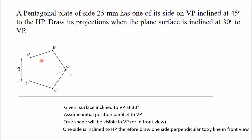This plane is parallel to VP, so the top view will be a line which is parallel to the XY line. One side is on VP, so I have kept one side A-dash E-dash on VP. Therefore the entire plane will be on VP because it is parallel to VP, so the top view will appear in the XY line. Draw the top view and project all the points. When you look from the top, A, B, and C are visible.